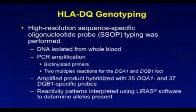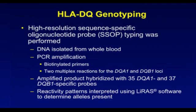For HLA-genotyping, we used high resolution sequence specific oligonucleotide probe typing, SSOP, from DNA isolated from whole blood of the patient samples. We then did PCR amplification for 35 DQA1 and 37 DQB1 specific probes. These reactivity patterns were then interpreted using LIRIS software to determine which alleles were present that are and are not associated with celiac disease.